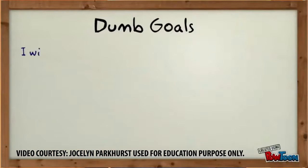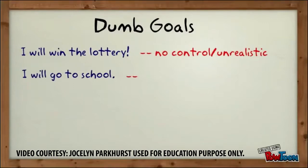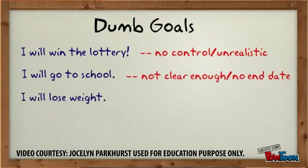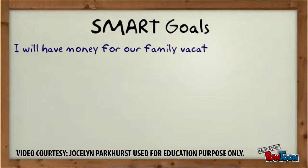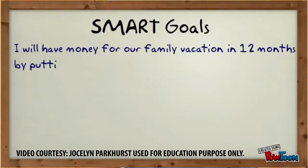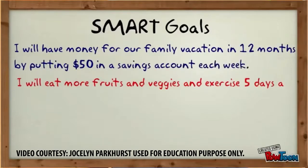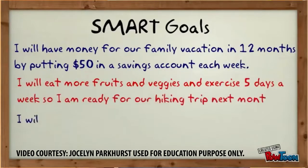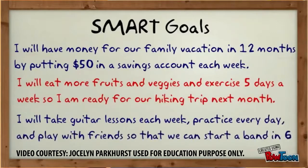Bad goals: I will win the lottery. I will go to school. I will lose weight. I will be a rock star next year. Smart goals: I will have money for my family vacation in 12 months by putting $50 in a savings account each week. I will eat more fruits and vegetables and exercise five days a week so I'm ready for our hiking trip next month. I will take guitar lessons each week, participate every day, and play with friends so that we can start a band in six months.